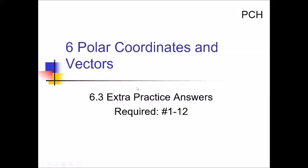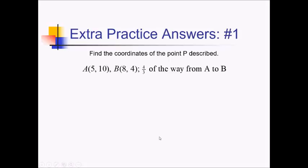Hey there, Mr. Sutton here, bringing you the PreCal Honors 6-3 Extra Practice Solutions on applications of vectors. On this problem, we're given two points A and B, and we want to figure out the point that's four-thirds of the way from A to B. So actually, we're going a little bit further than point B on this one, because our fraction's bigger than one.